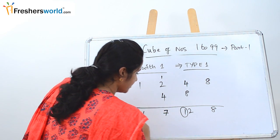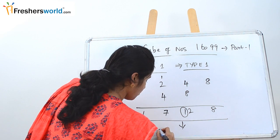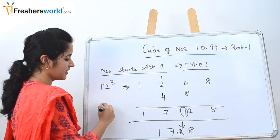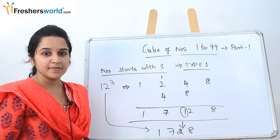2 plus 1, 3 plus 4 equals 7. So 1, 7, 2, 8. How are we going to write this? 1, 7, 2, 8. So 12 cube is 1728.